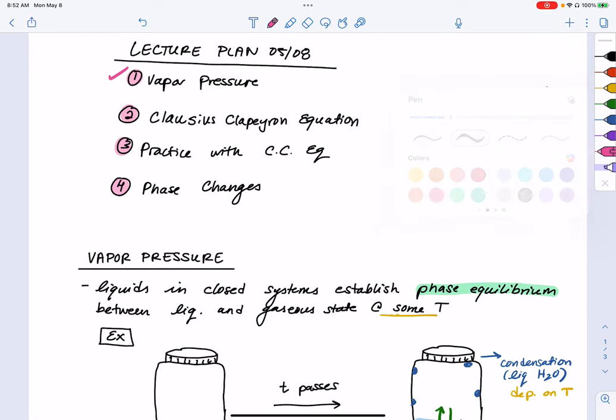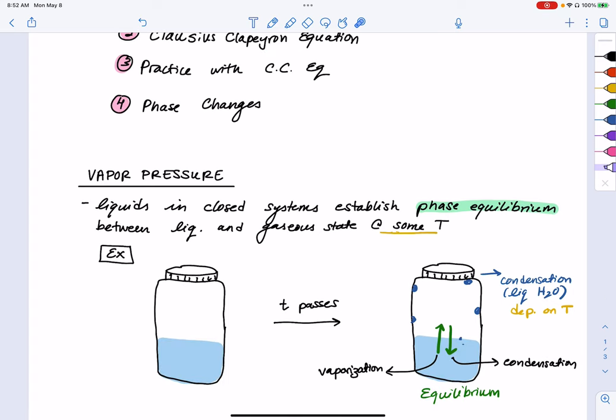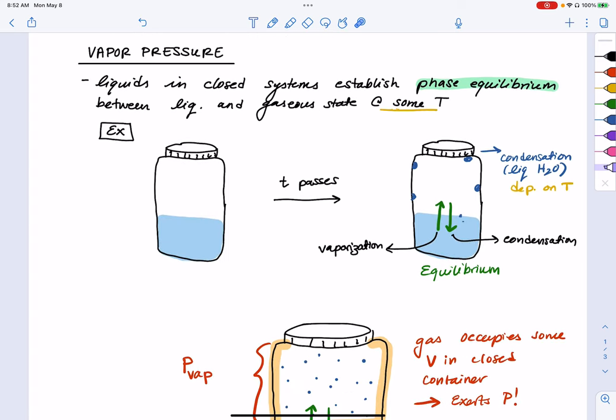So coming up next in video two, we are going to look at the Clausius-Clapeyron equation, which describes the relationship between temperature and vapor pressure. So how is it that this phase equilibrium is affected by temperature?